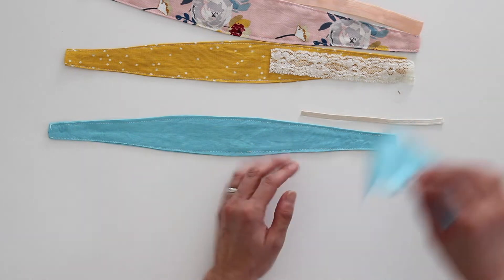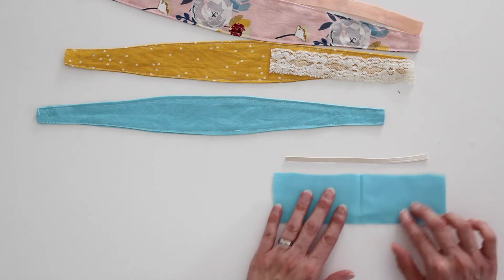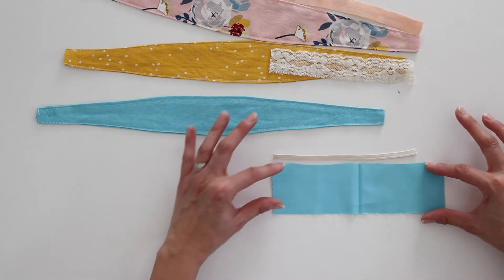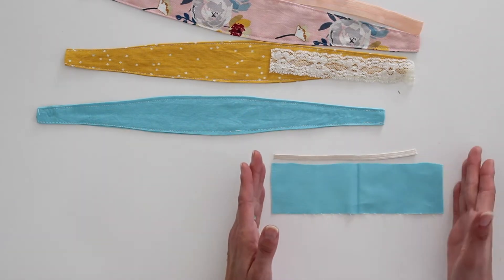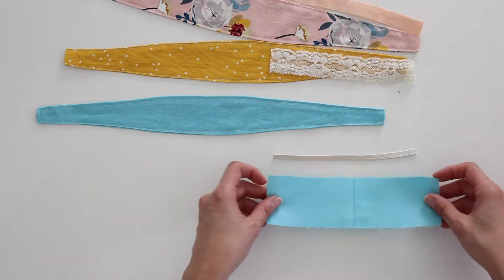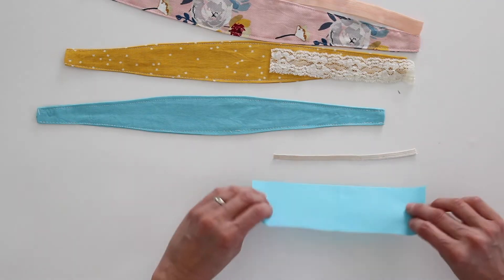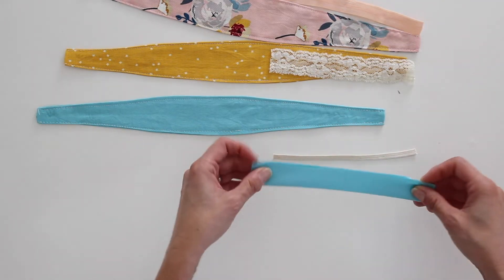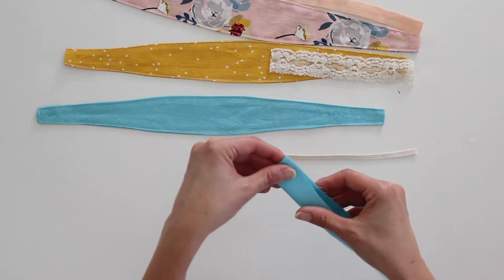So the first thing you want to do is, this is six inches of elastic. You want to cut a piece that is two inches wide by an inch longer than your elastic because we're going to scrunch it up on there. And then we want to fold this right sides together and I'm going to sew down the long edge.